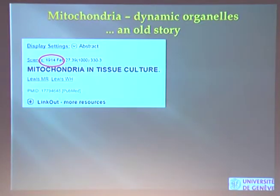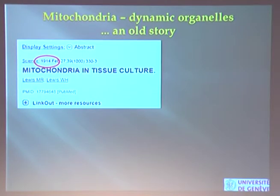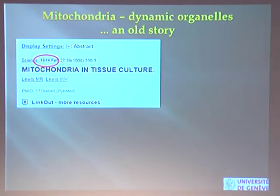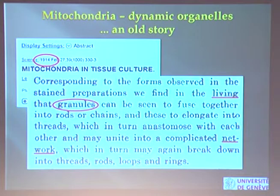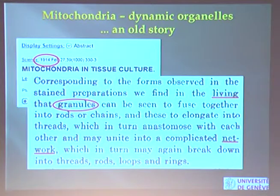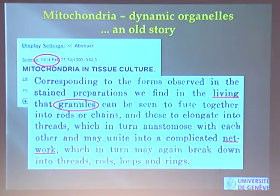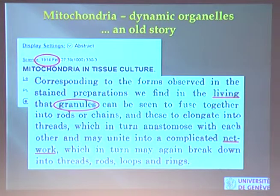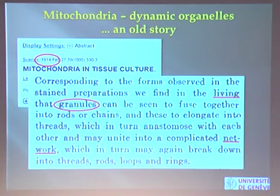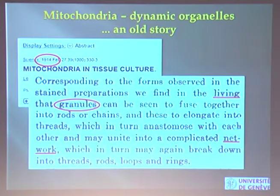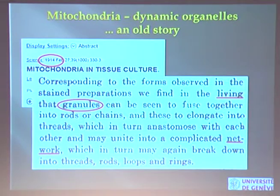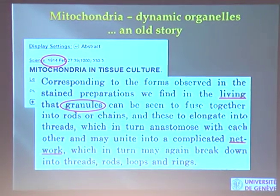This view of mitochondria as very mobile agents is not entirely new. There is a paper in Science from 1914 which talks about watching mitochondria in tissue culture from chicken embryos. They found granules — at that time not everyone accepted the term mitochondria — and these granules can be seen to fuse together into rods or chains and elongate into threads. This looks like a network, exactly what we showed with the fluorescent proteins. Probably 1914 was a bad year to start this, and it took one more century to go back to this living network.